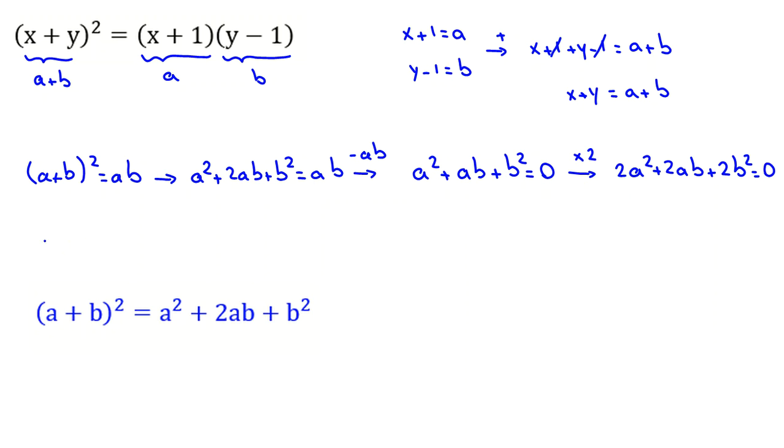So I say 2a squared, I write it as a squared plus a squared. 2ab I write 2ab again. For 2b squared, I write it as b squared plus b squared. Here I can use again this identity.